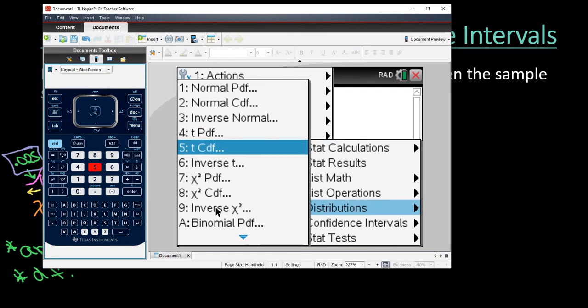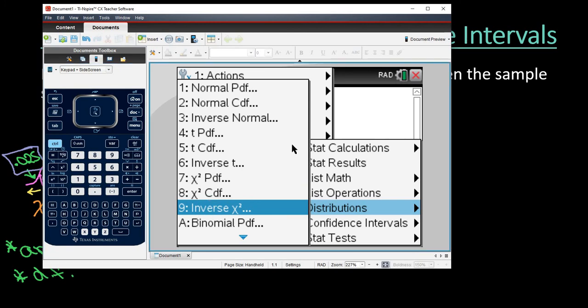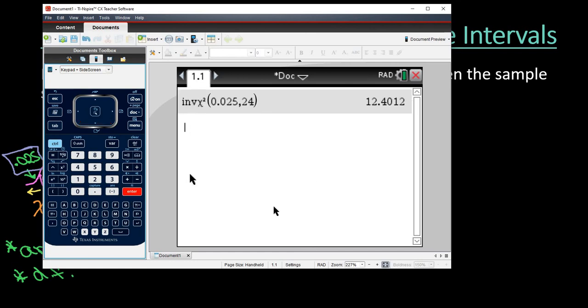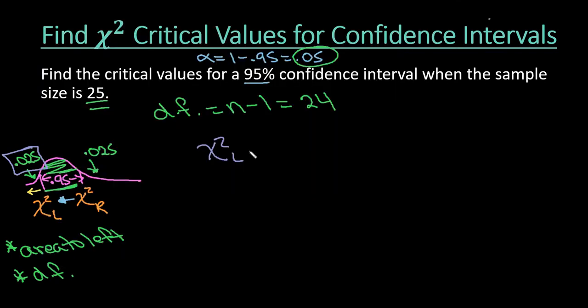And if you notice in here, they do have an inverse chi square, so I would just choose option nine. So option nine is inverse chi square. The area is always going to be the area to the left, so we just found that that was 0.025. And then our degrees of freedom we found is 24. And then all I have to do is hit enter, and that gives me my value. So 12.401 would be my critical value at the lower end.